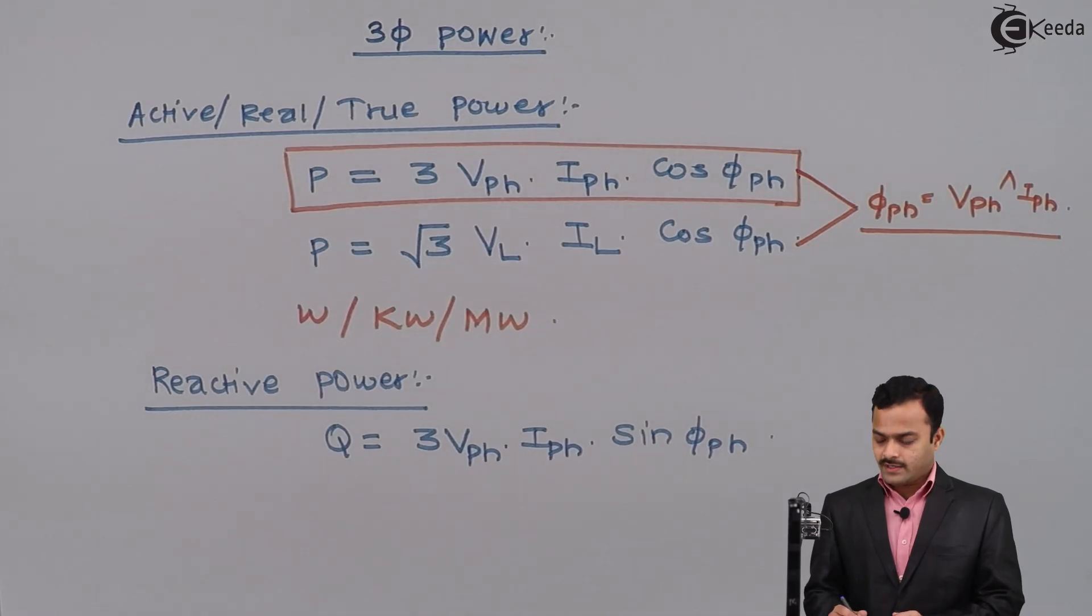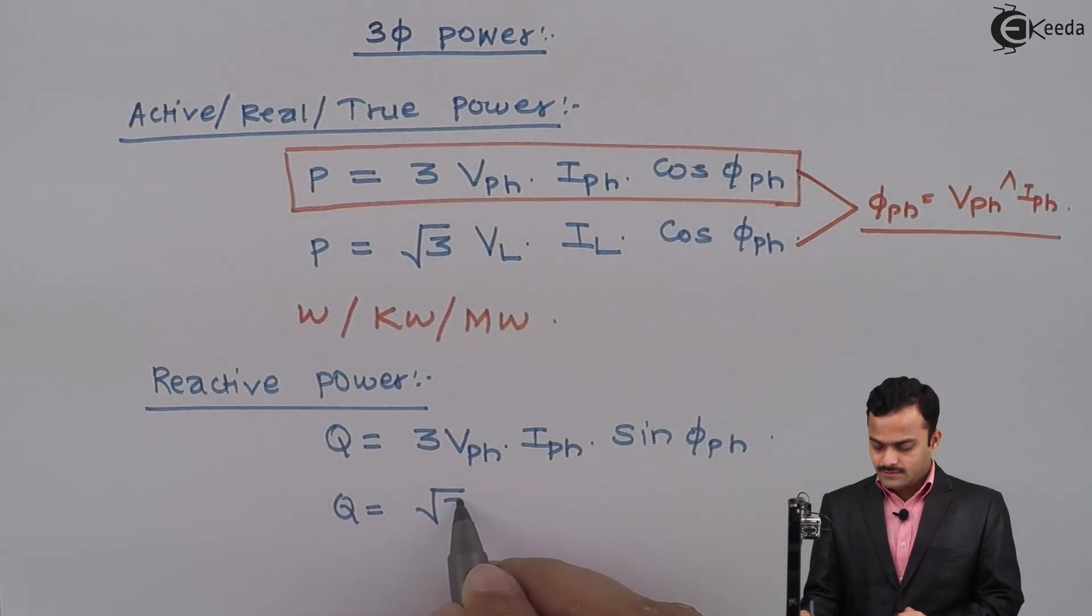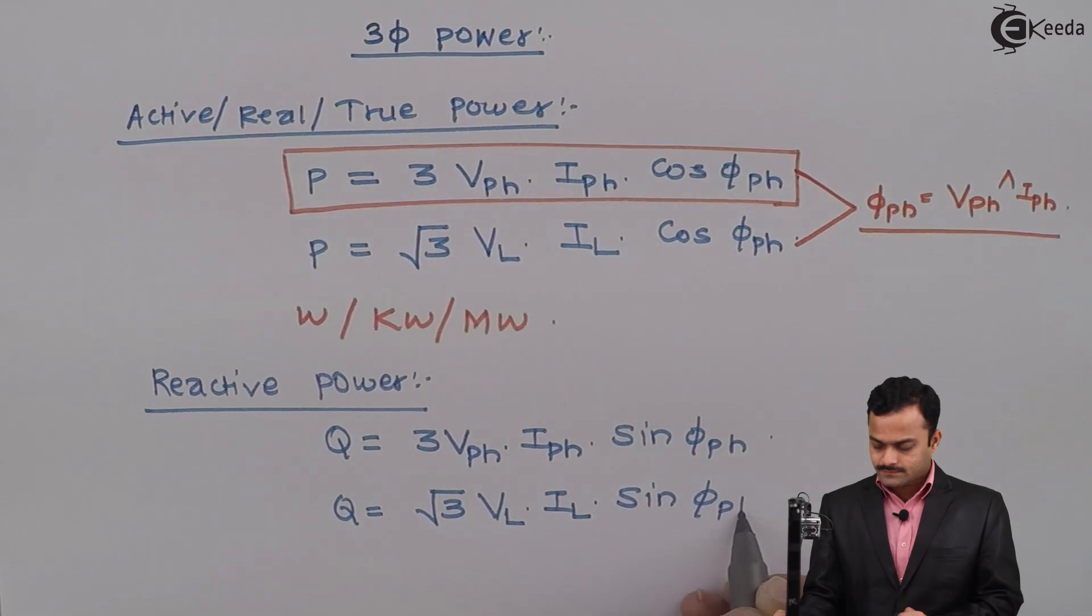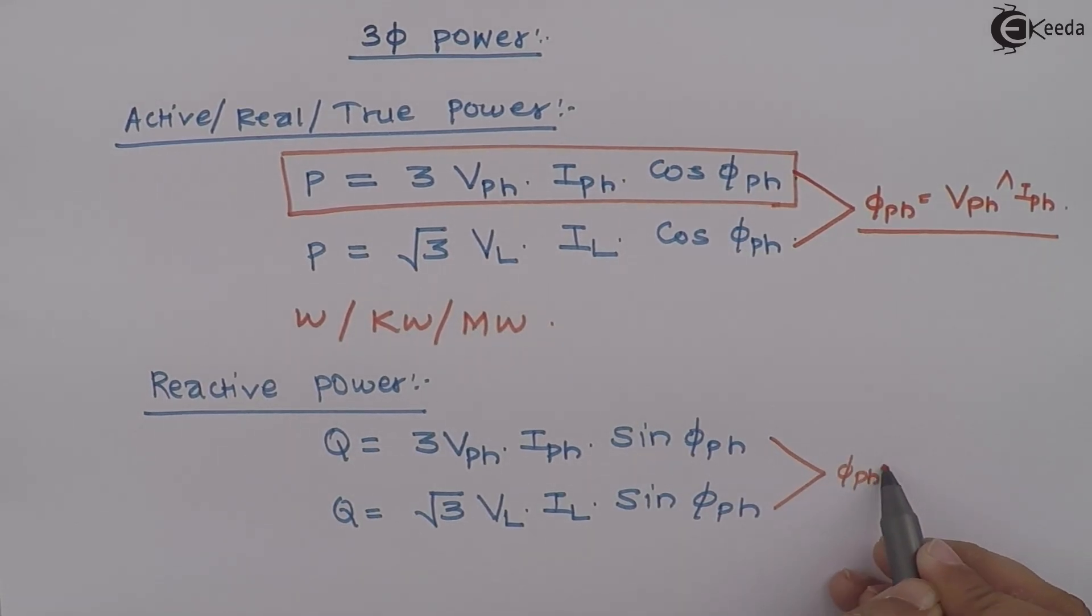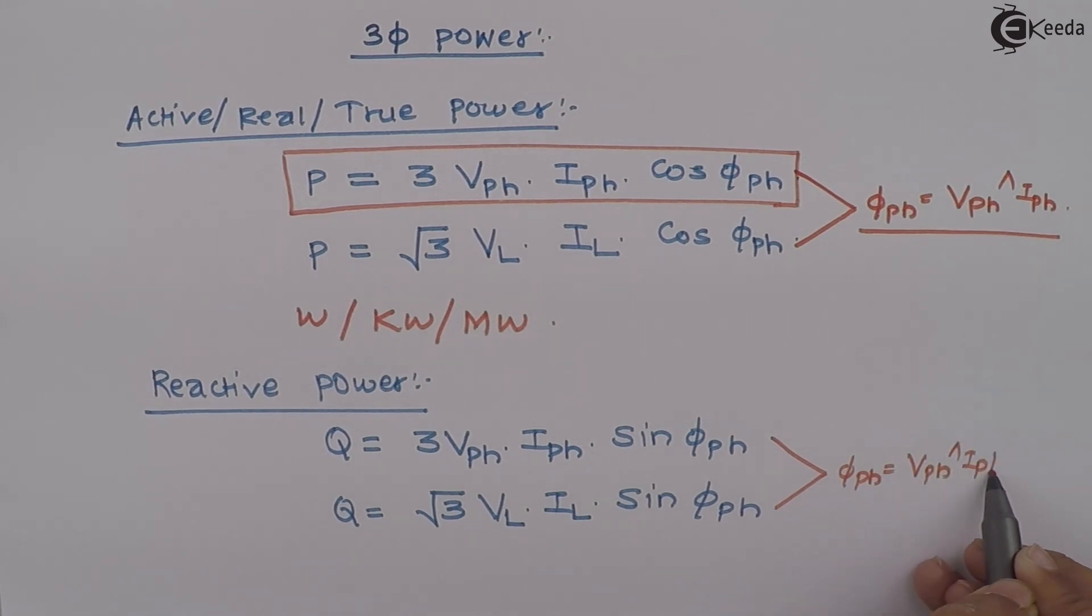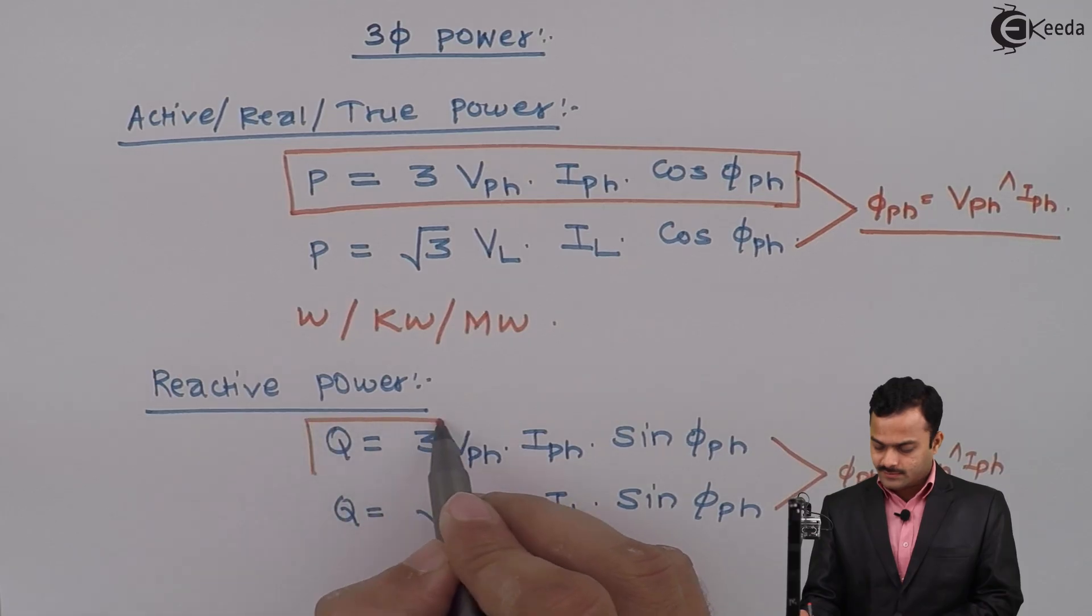Once again you can write this in terms of line quantities, root 3 VL, IL, sin φPH. Same story repeats over here. φPH is the angle between VPH and IPH. Hence, better we remember this expression.